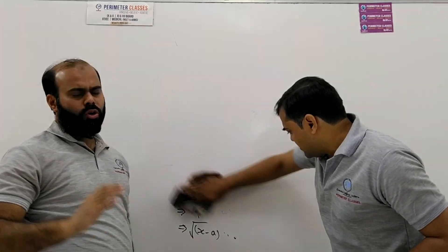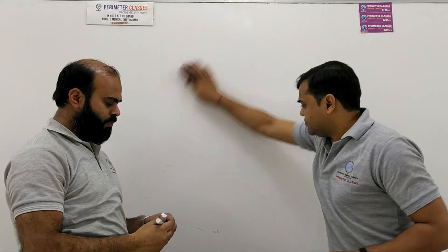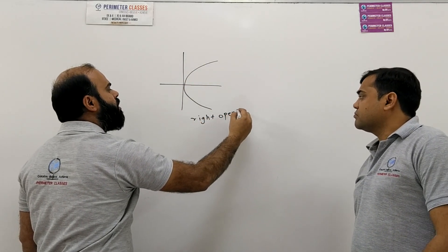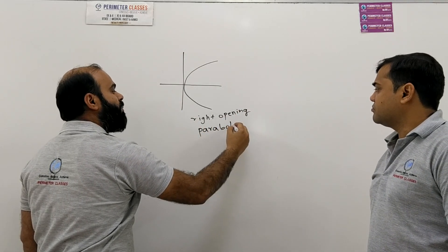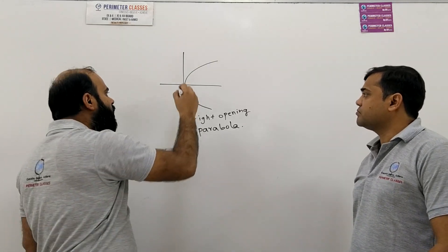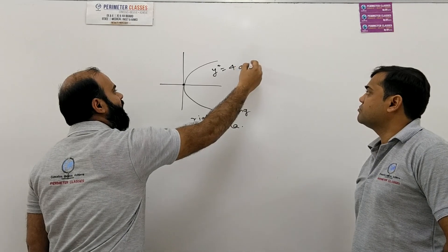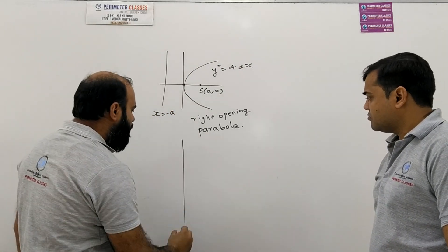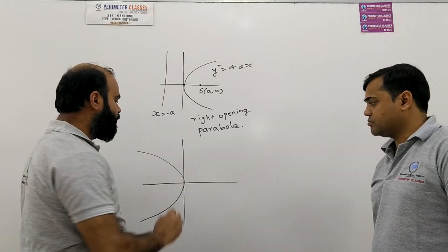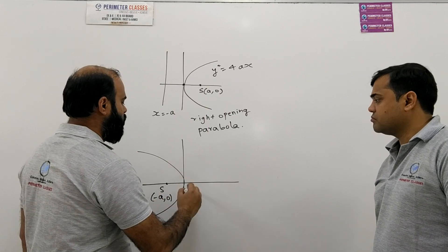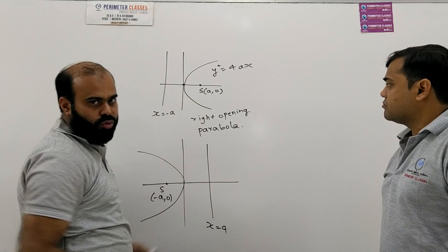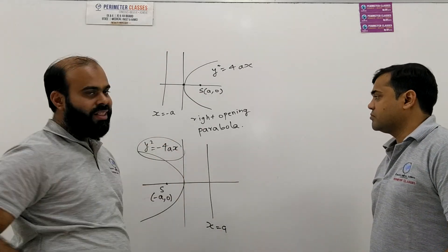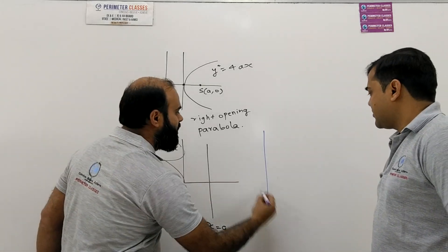I am considering four simple standard cases. First, the right-opening parabola with equation y² = 4ax, where the focus is (a, 0) and directrix is x = −a. Second, the left-opening parabola, where the focus is (−a, 0) and directrix is x = a — just interchange both — and its equation is y² = −4ax.